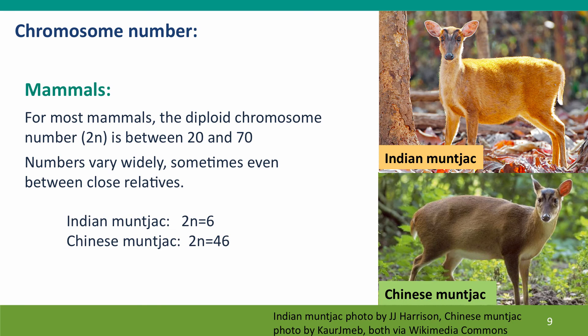What about chromosome number — how stable is it? From the human-chimpanzee chromosome two example, we know chromosomes can fuse together, and overall chromosome number in mammals is fairly stable. Most mammals have between 20 and 70 diploid chromosomes, so between 10 and 35 in the gamete. But numbers can vary widely even between close relatives. The most dramatic example is two small deer called muntjac deer: the Indian muntjac has only three chromosomes (n=3, 2n=6), while its close relative the Chinese muntjac has 46 chromosomes, a much more typical mammalian number. We don't know why.